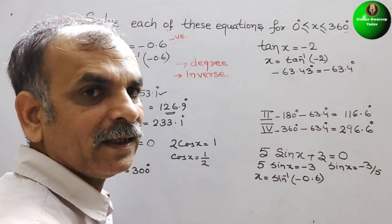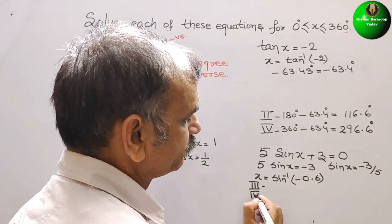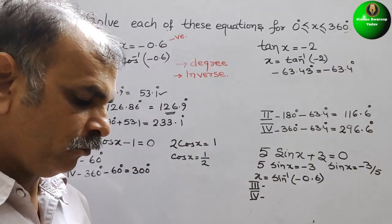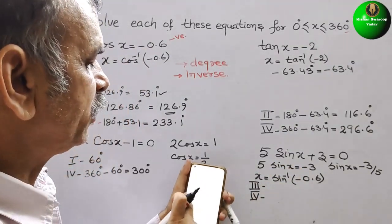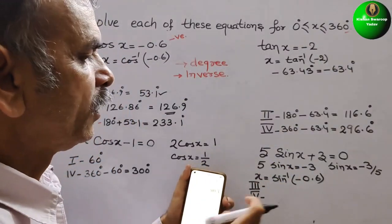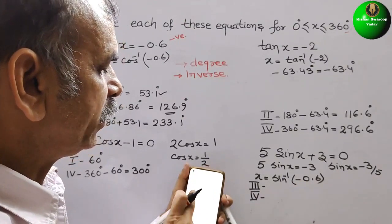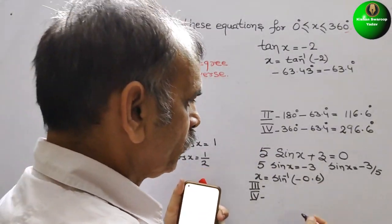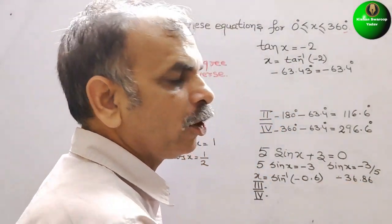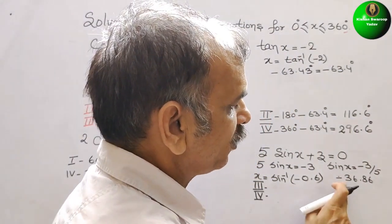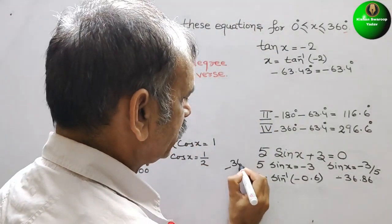Sin is negative in the third and fourth quadrant. Using the calculator, press sin inverse and write -0.6. We get -36.86°, which is approximately -36.9°.